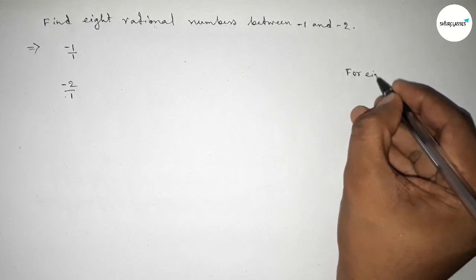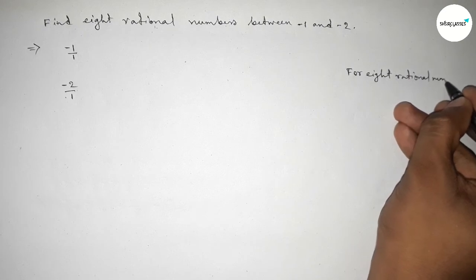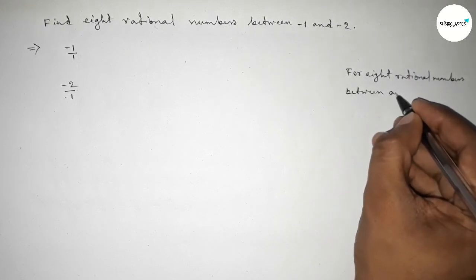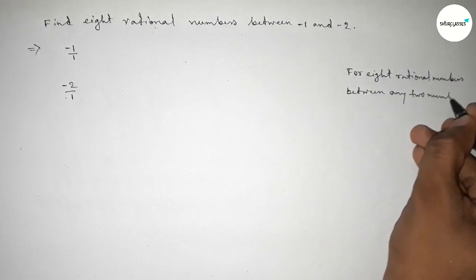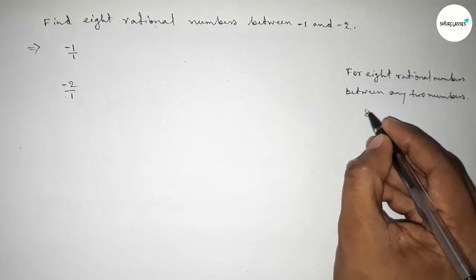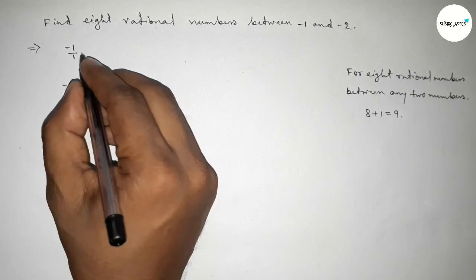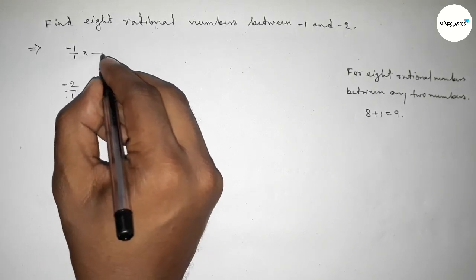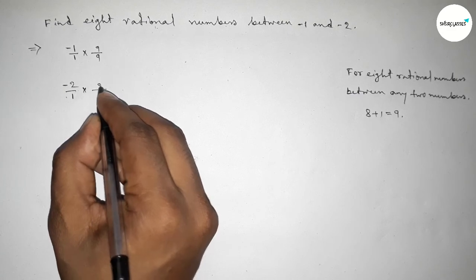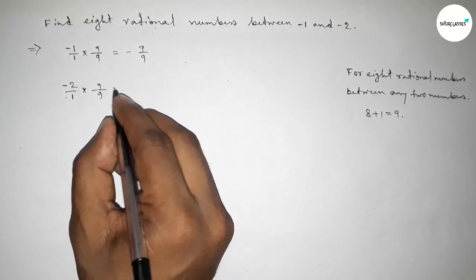Now discussing an important method: for finding 8 rational numbers between any two numbers, we have to follow this method. We should multiply both numbers by 8 plus 1, which equals 9. So multiplying both numbers by 9, we get minus 9 over 9 on one side.